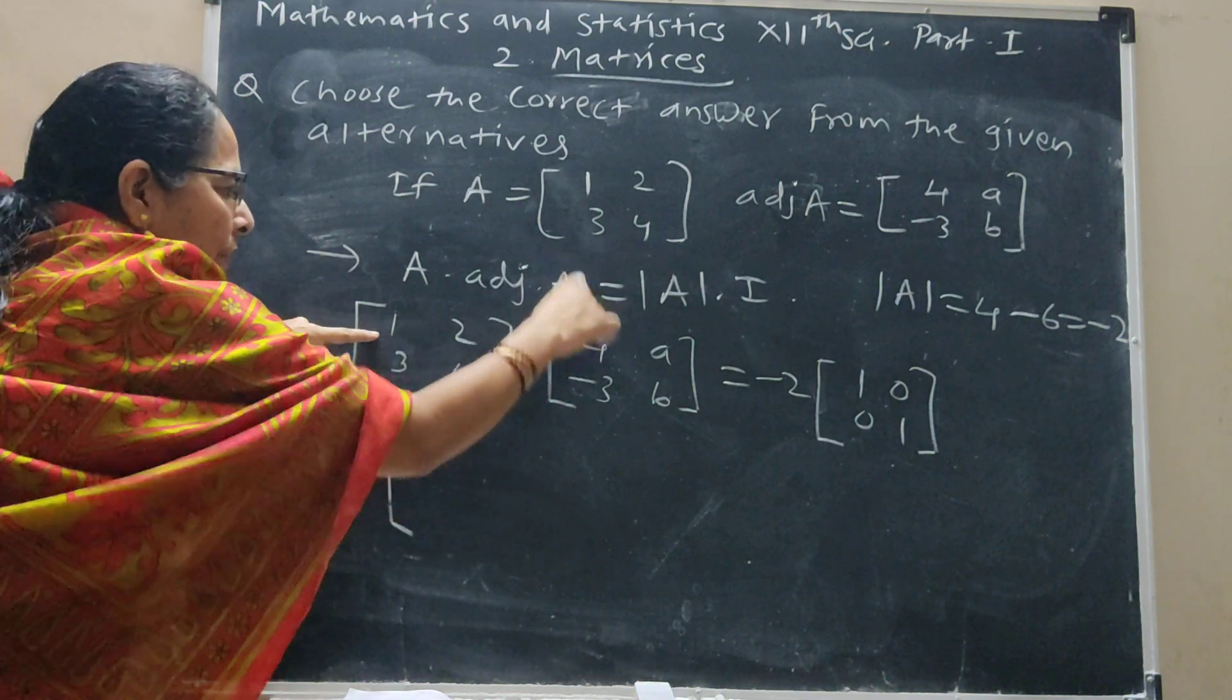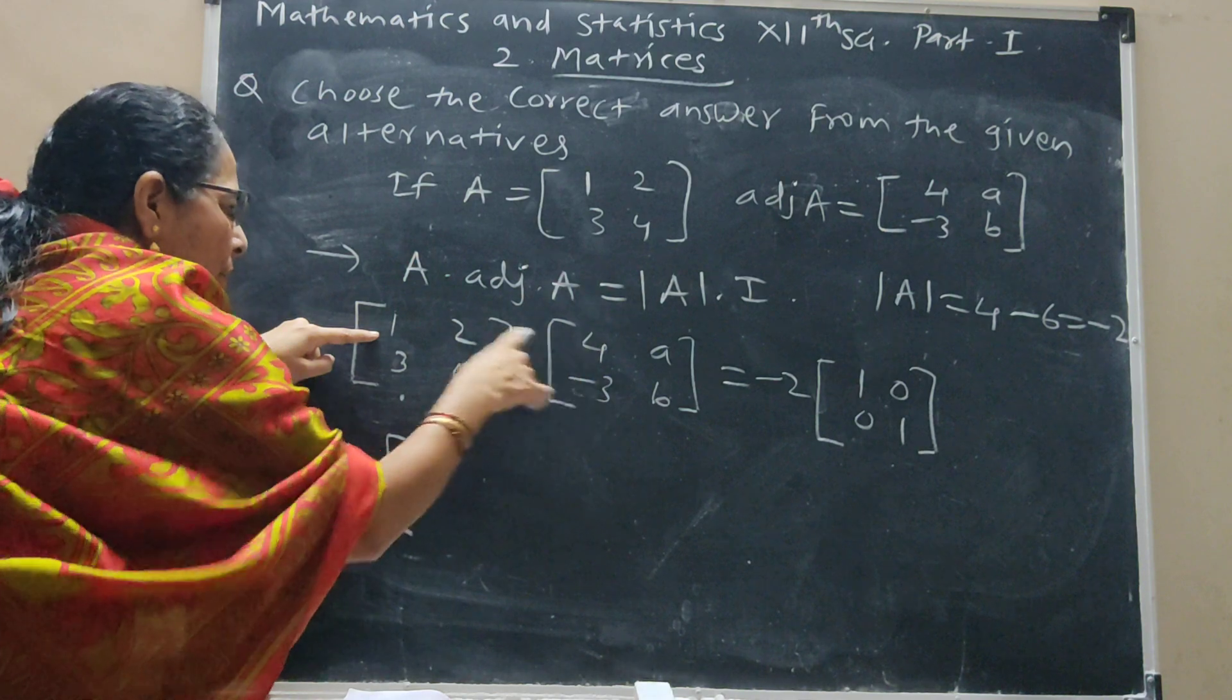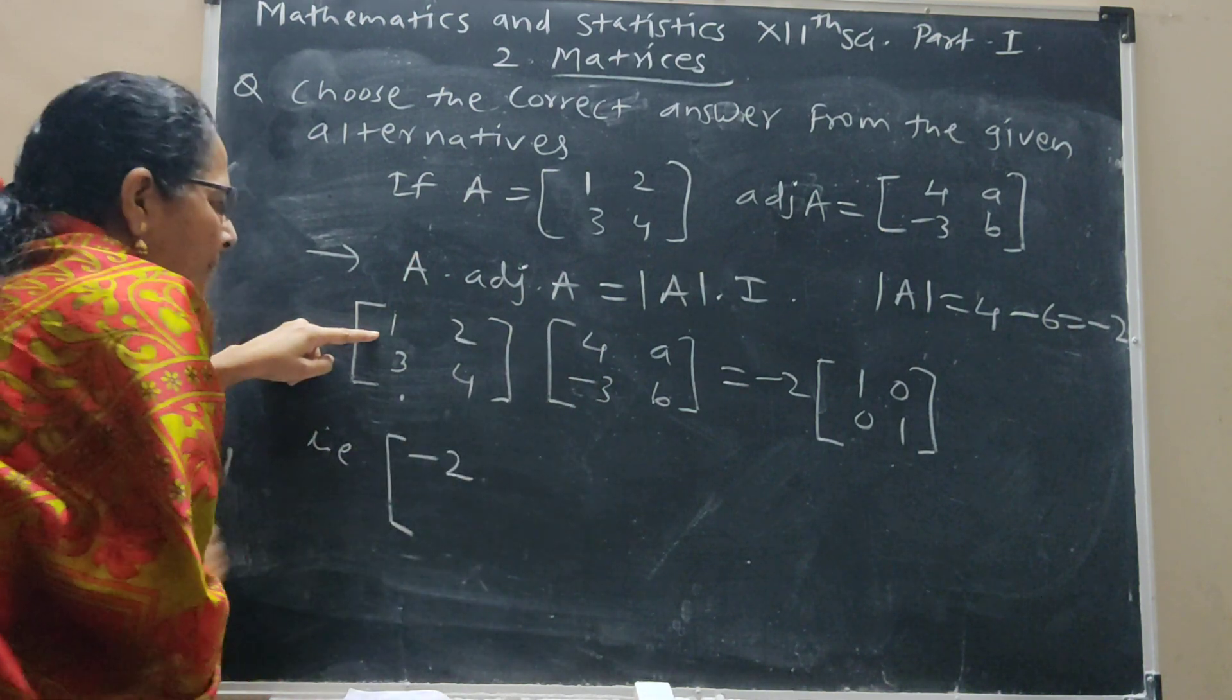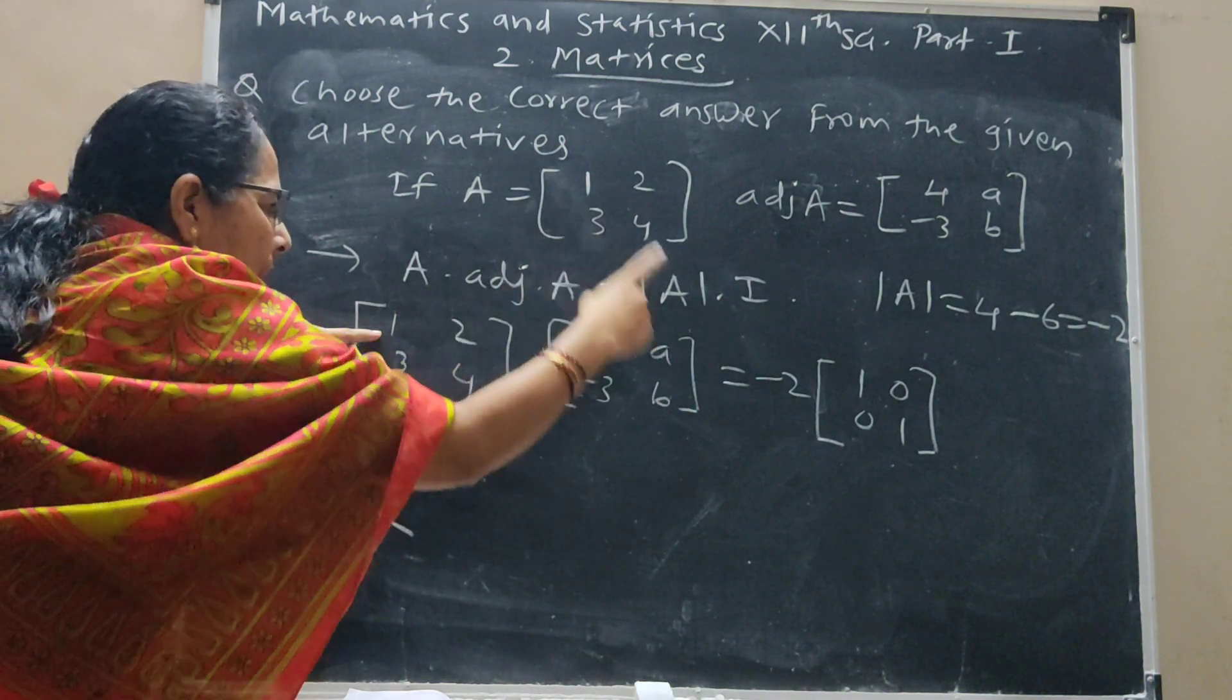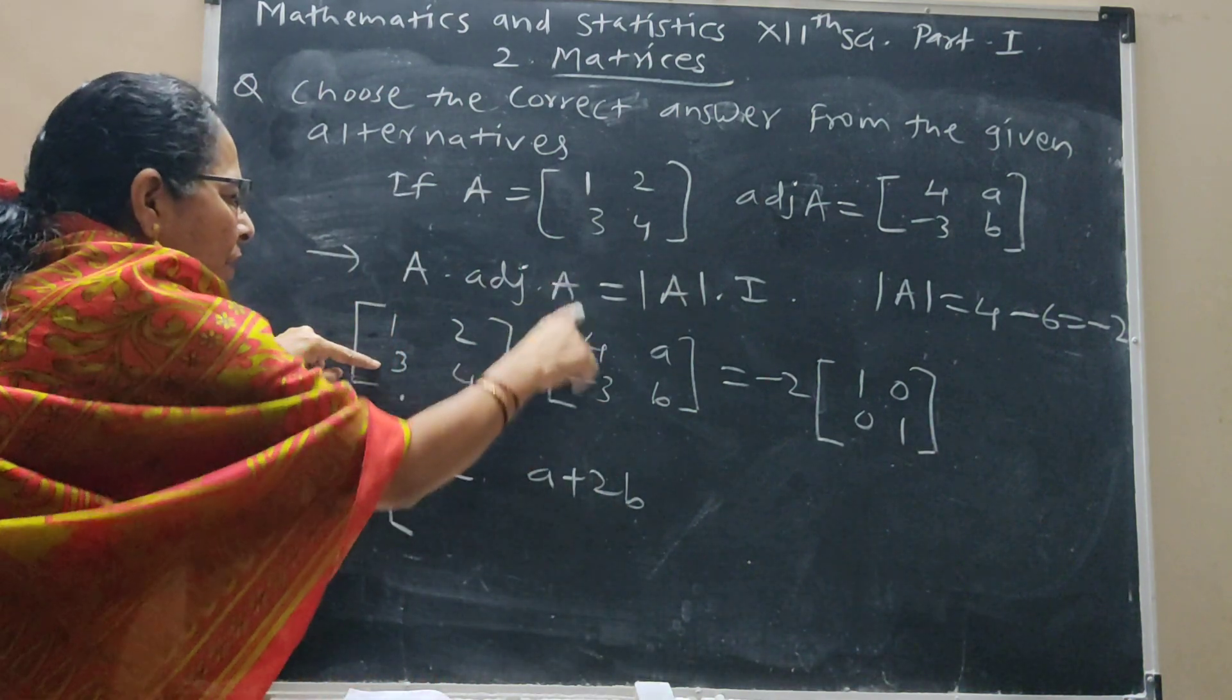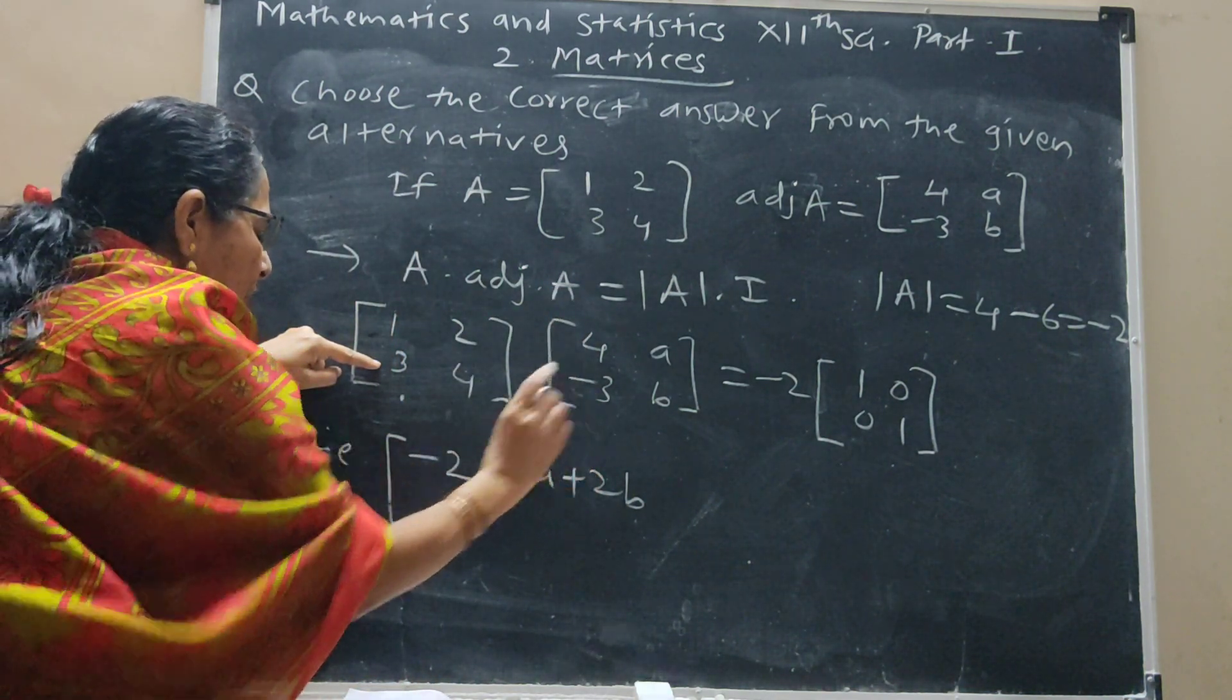Now take the product like this. This row, this column, element here, so 4 minus 6, which is minus 2 here. Then this row, this column, A plus 2B. This row, this column, 12 minus 2 equals 0.